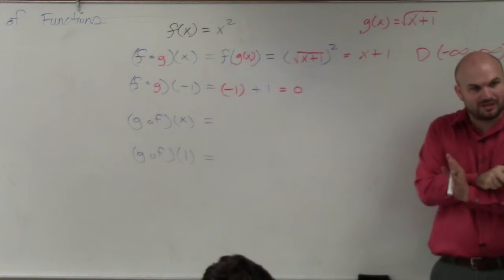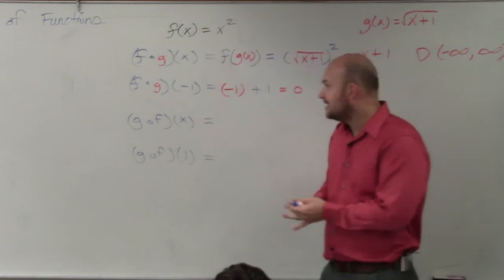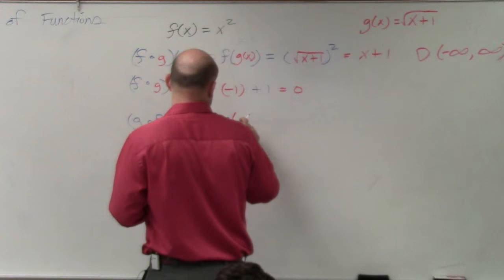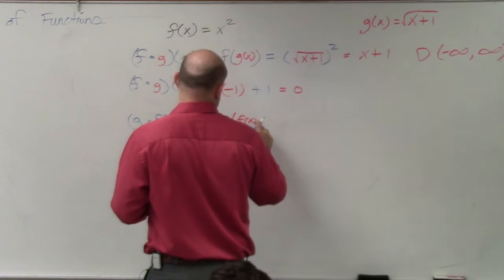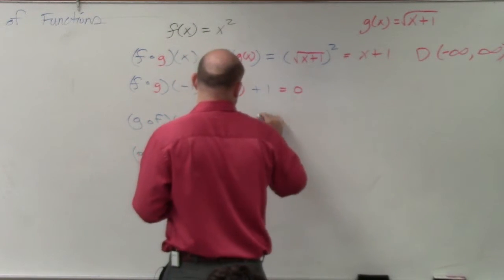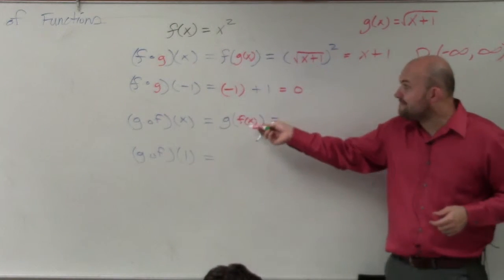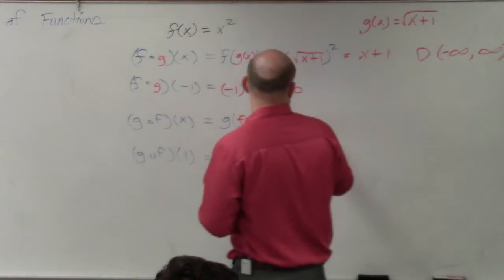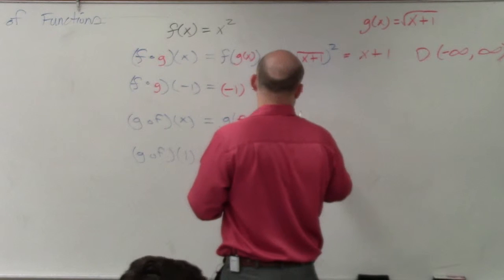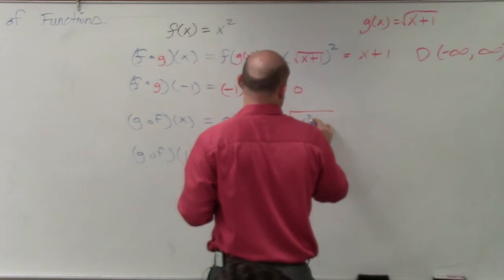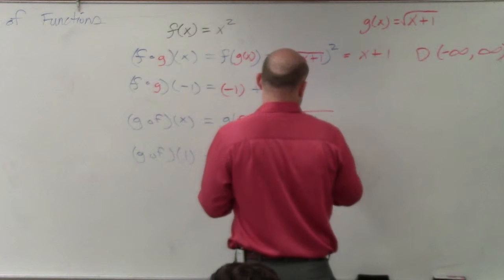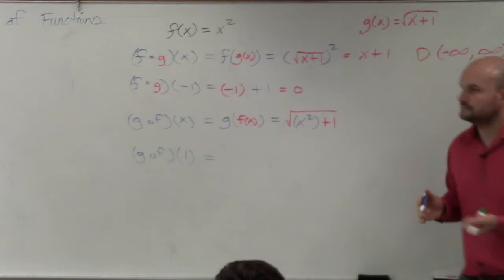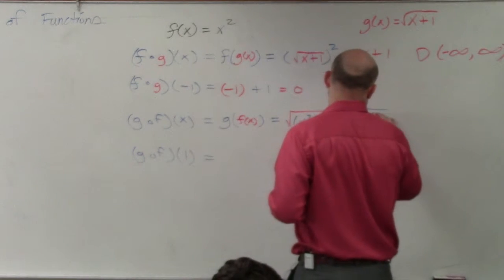Now we're going to switch it. Now I'm going to plug g of f basically is telling us to take the f of x function and then plug it into g. So now I'm going to take what f of x equals and I'm going to plug it into g of x. So that's going to look like this. square root of x squared plus 1, which is in reality, square root of x squared plus 1.